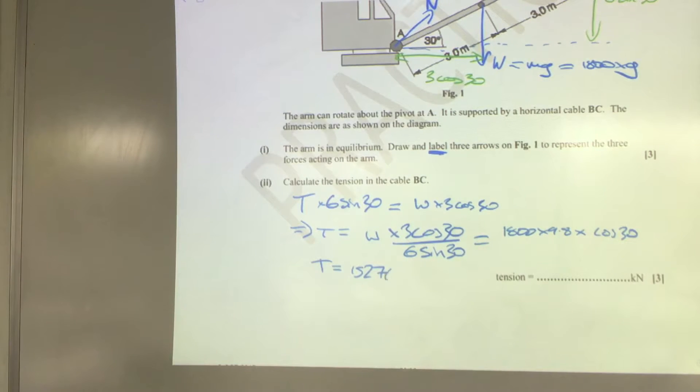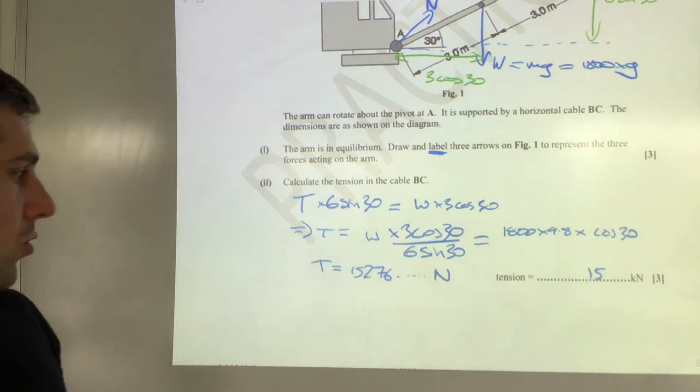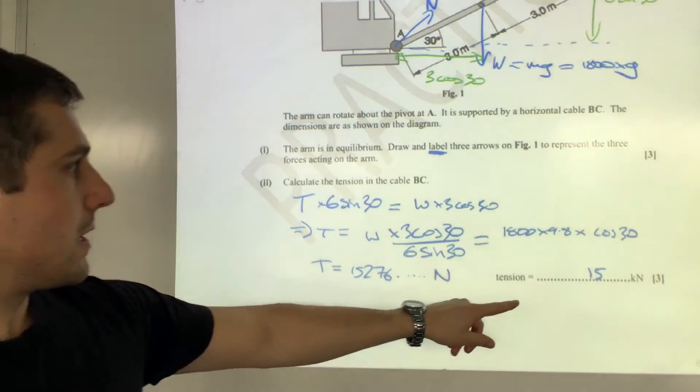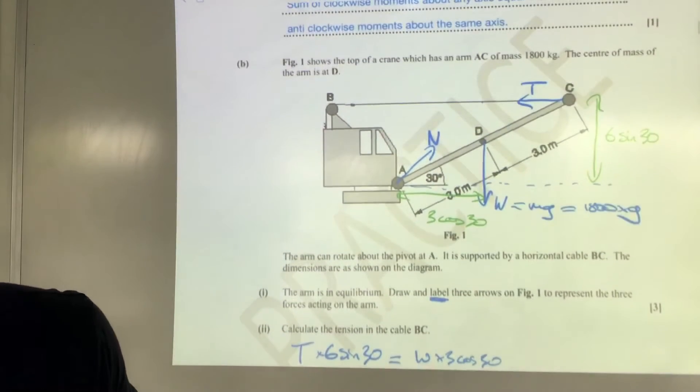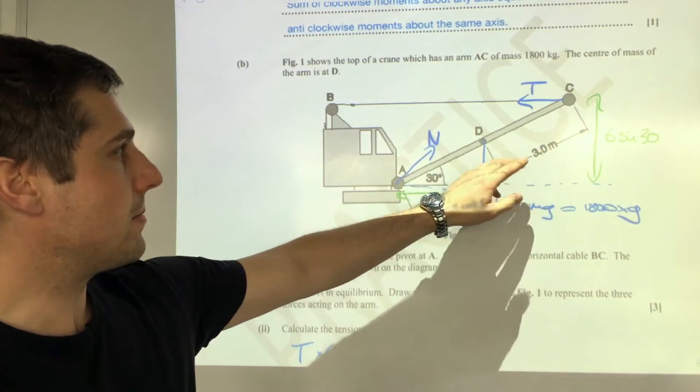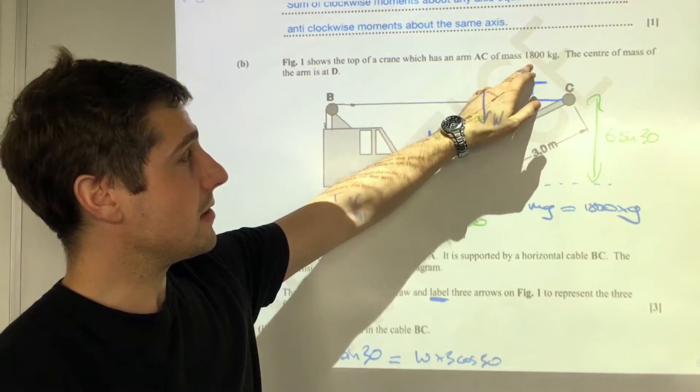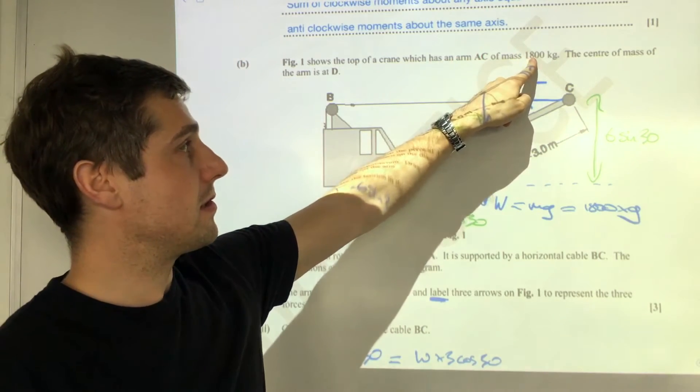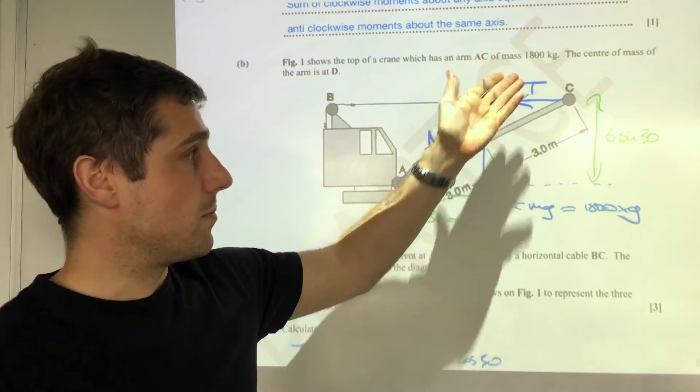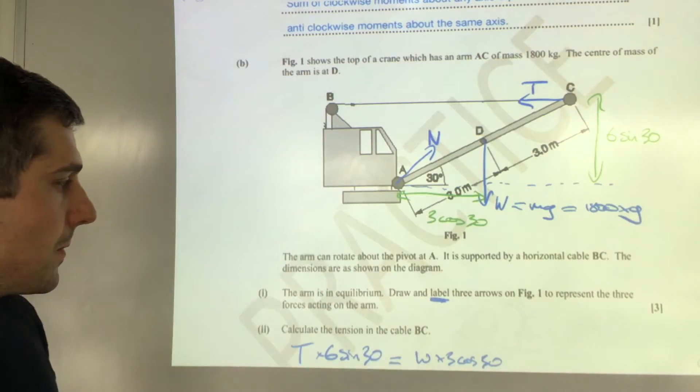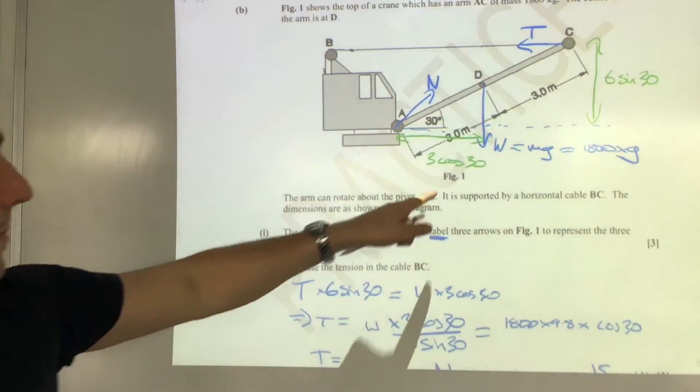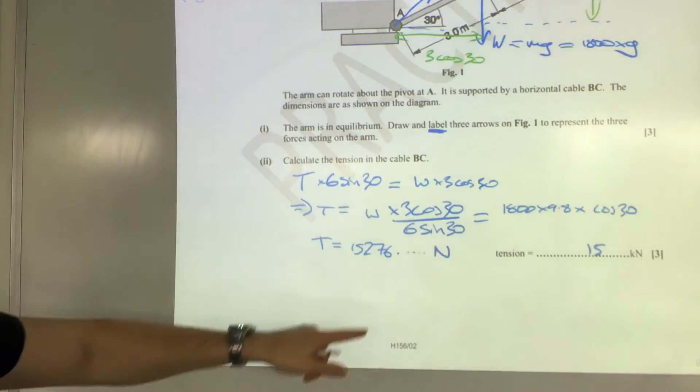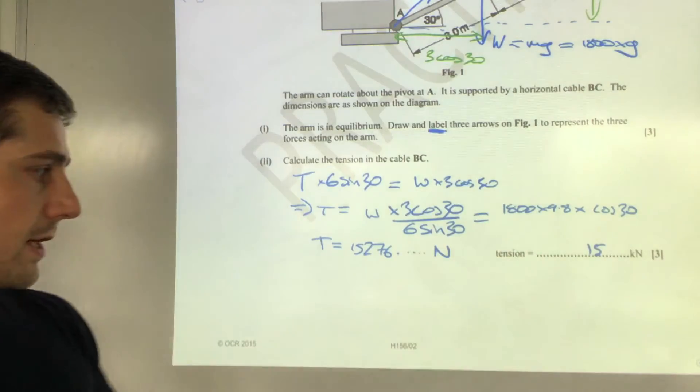The unit is kilonewtons, so I'm going to say that as 15 kilonewtons, or you could say 15.3. I'm using 15 because these distances here were given to me in two significant figures. The mass was ambiguous actually—1800 could be two, I think it's probably two, it could be three or it could be four. I'm going to assume that the minimum significant figures is certainly two from the distances, so I've stated it as two, but you can state it as two or three.